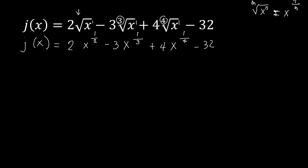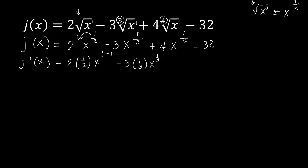Now we're ready to find the derivative. The derivative of j of x equals: 2 times the constant multiple, bring down the fractional exponent 1 half, times x to the power of 1 half minus 1; minus 3, bring down 1 third, times x to the power of 1 third minus 1; plus 4, bring down 1 fourth, times x to the power of 1 fourth minus 1. The minus 32 disappears because the derivative of a constant is 0.